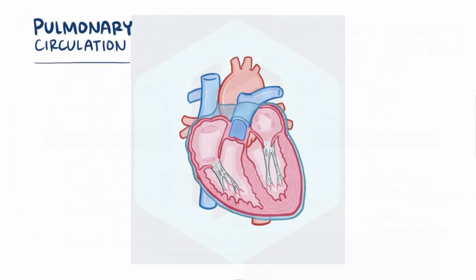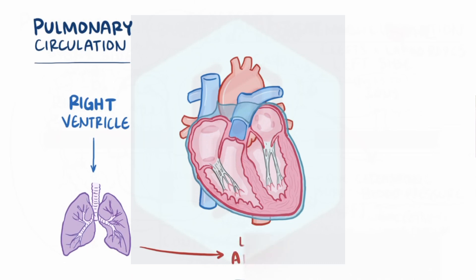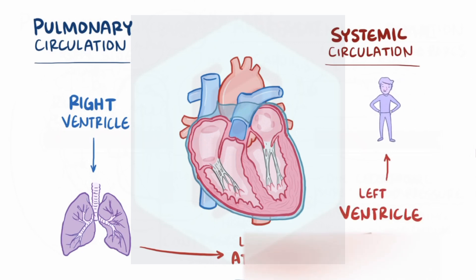Alright, as a quick recap, the pulmonary circulation starts with the right ventricle, which delivers blood to the lungs, which then sends fresh oxygenated blood to the left atrium, at which point it enters the systemic circulation, starting with the left ventricle, which pumps blood to the body, and then deoxygenated blood comes back to the right atrium and it all starts over again.